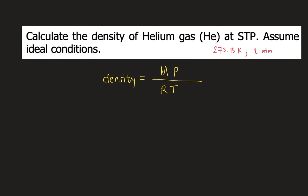So capital M is the molar mass of the gas. In our problem, the gas is helium. And the molar mass of helium is 4.003 grams per mole.